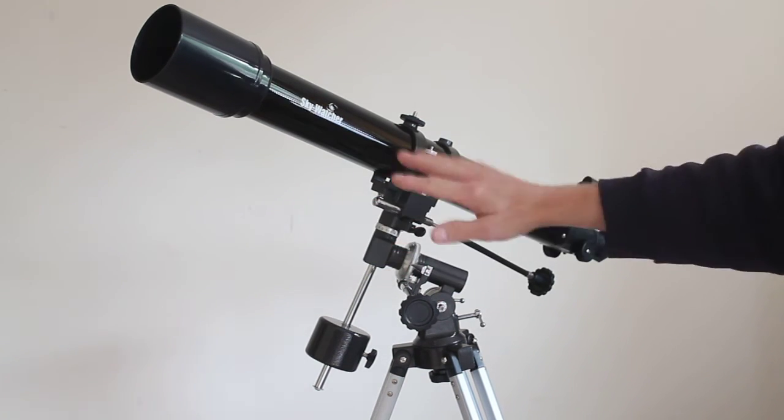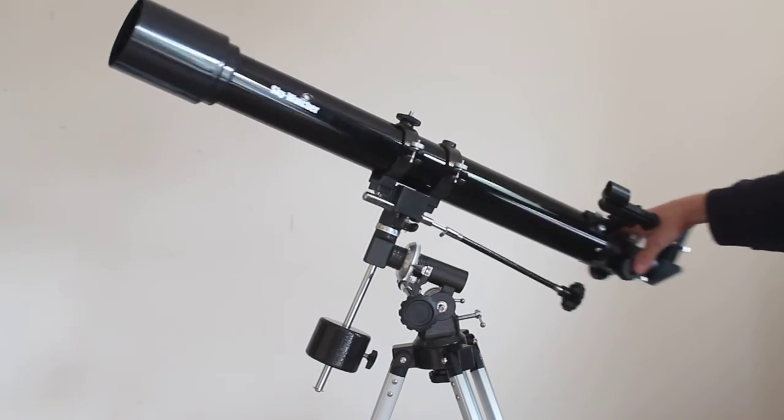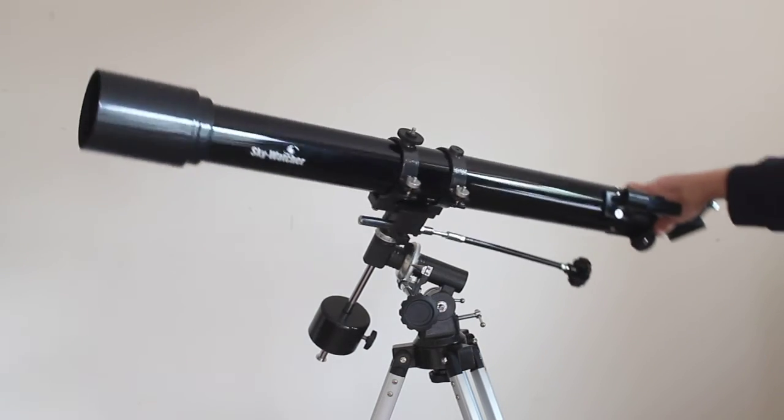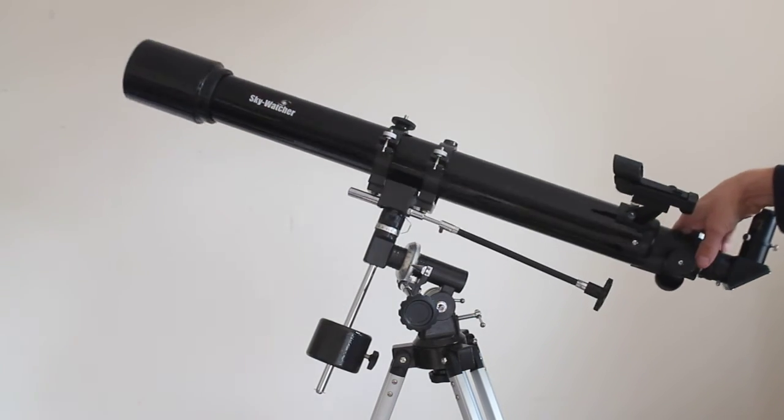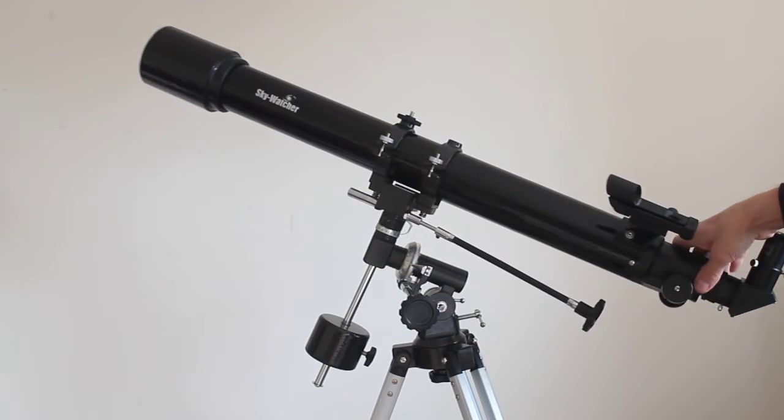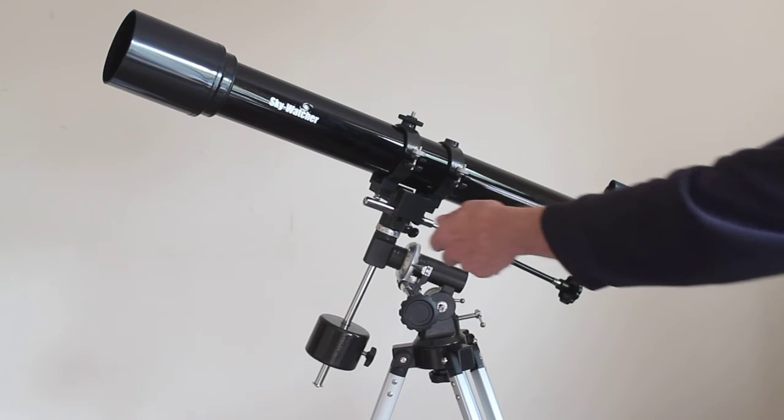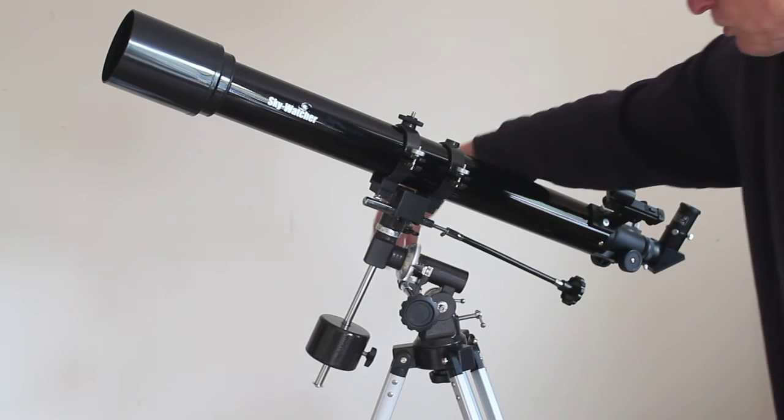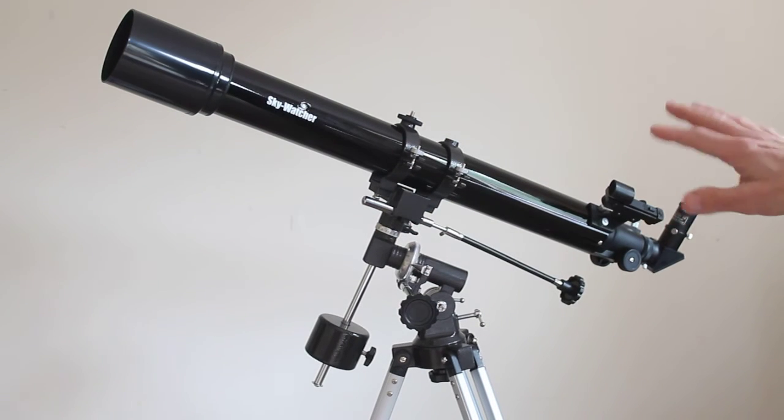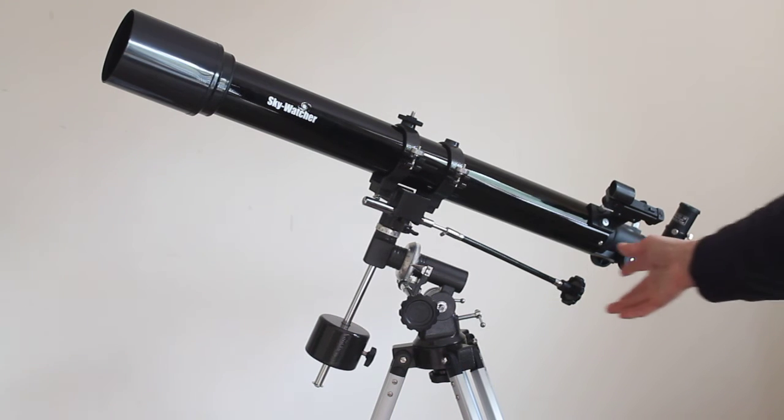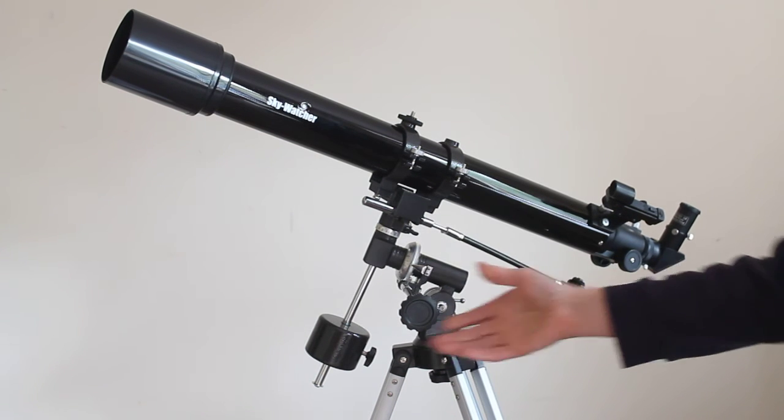So I've got the mount quite slack here just to show you how that is just effortless moving should you want to initially find the target. And then you just tighten these two little screws, find out where they are in daylight so you don't start faffing about looking for them in the dark, and then you can use the slow motion controls.